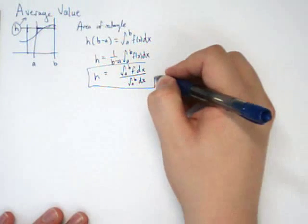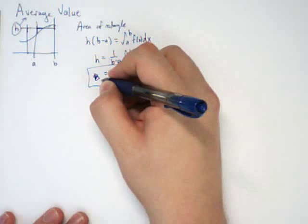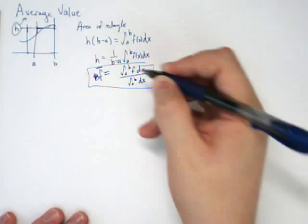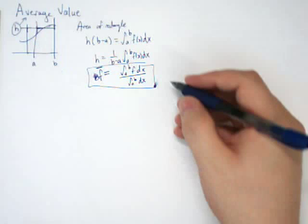So this is how you find average value. You could write F bar, the average value of F is equal to that quantity.